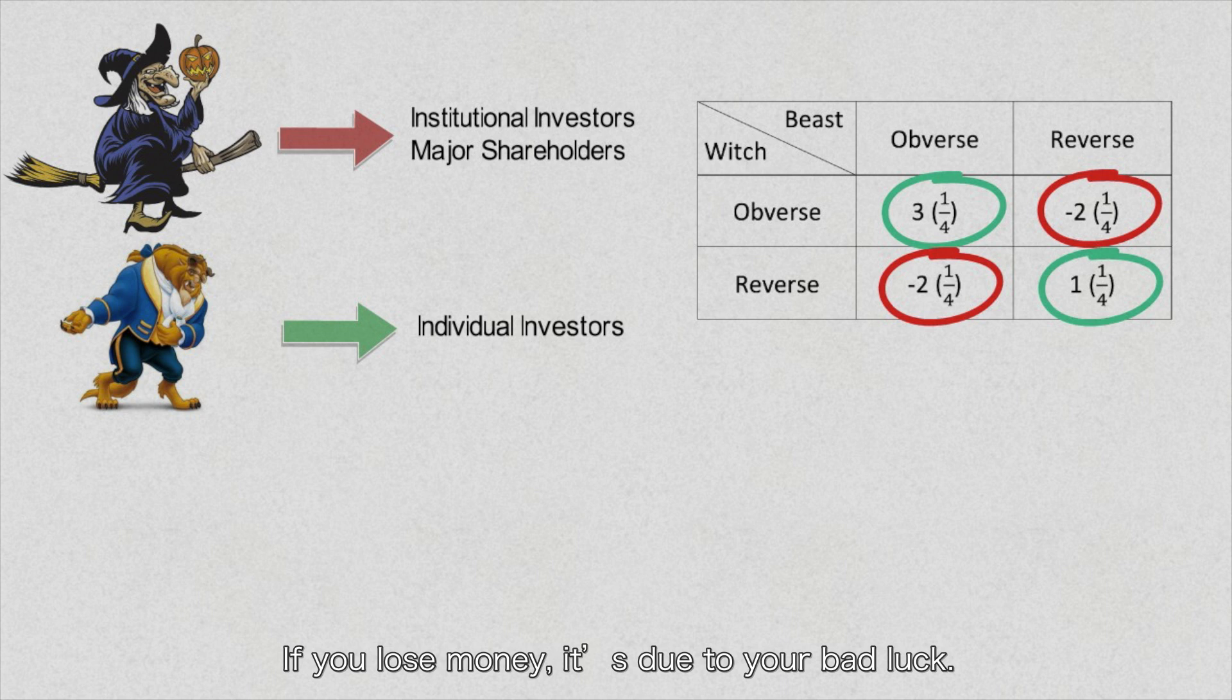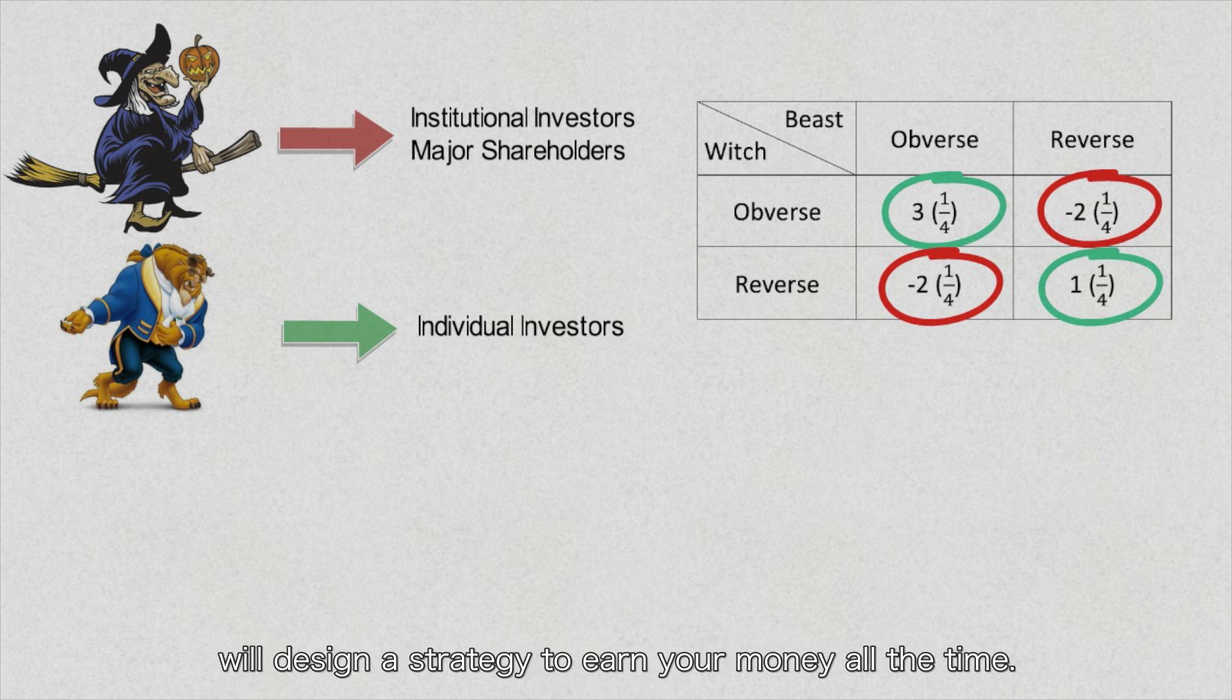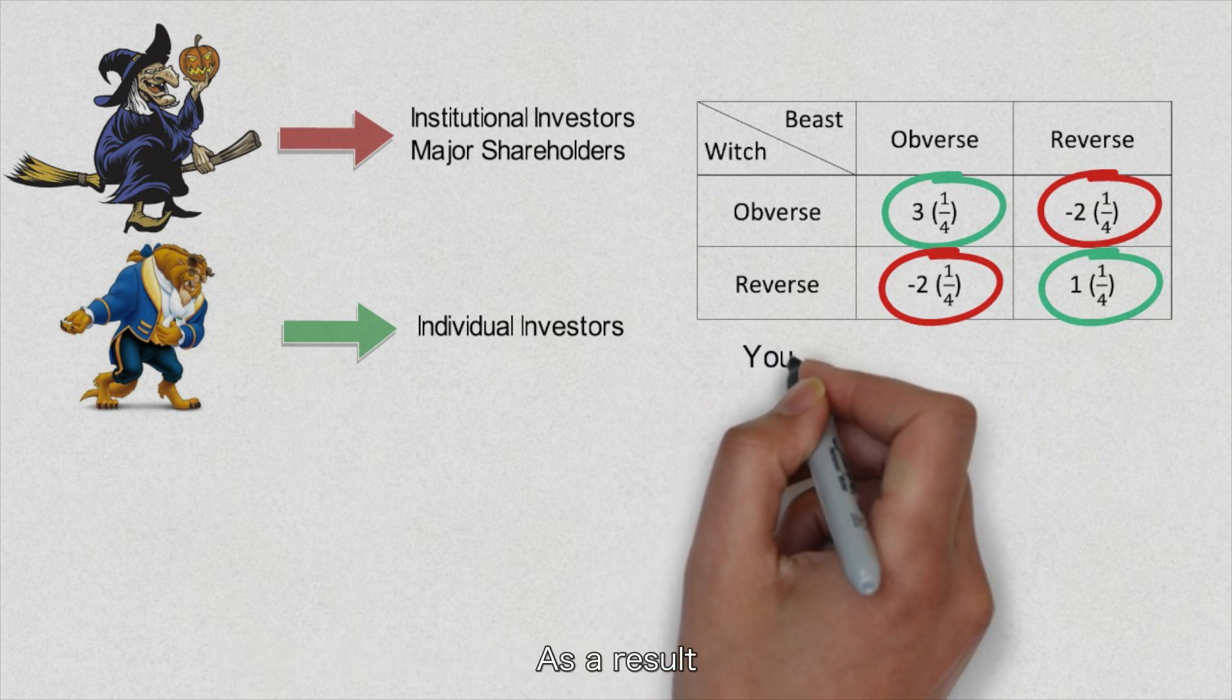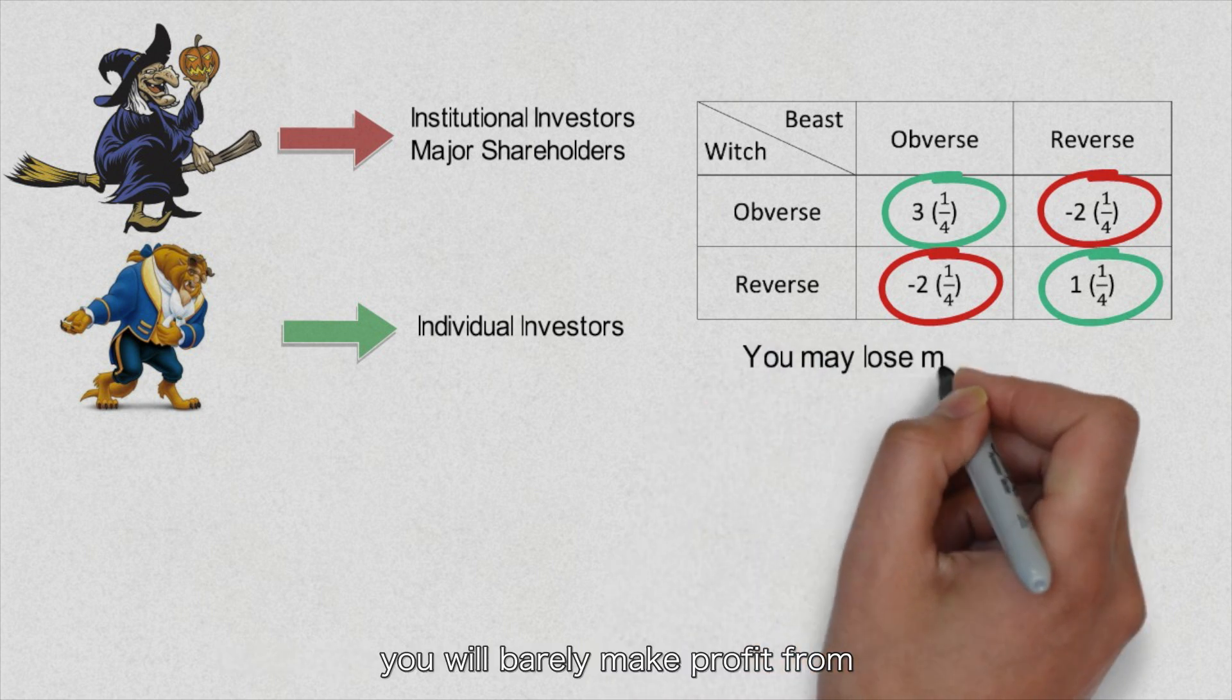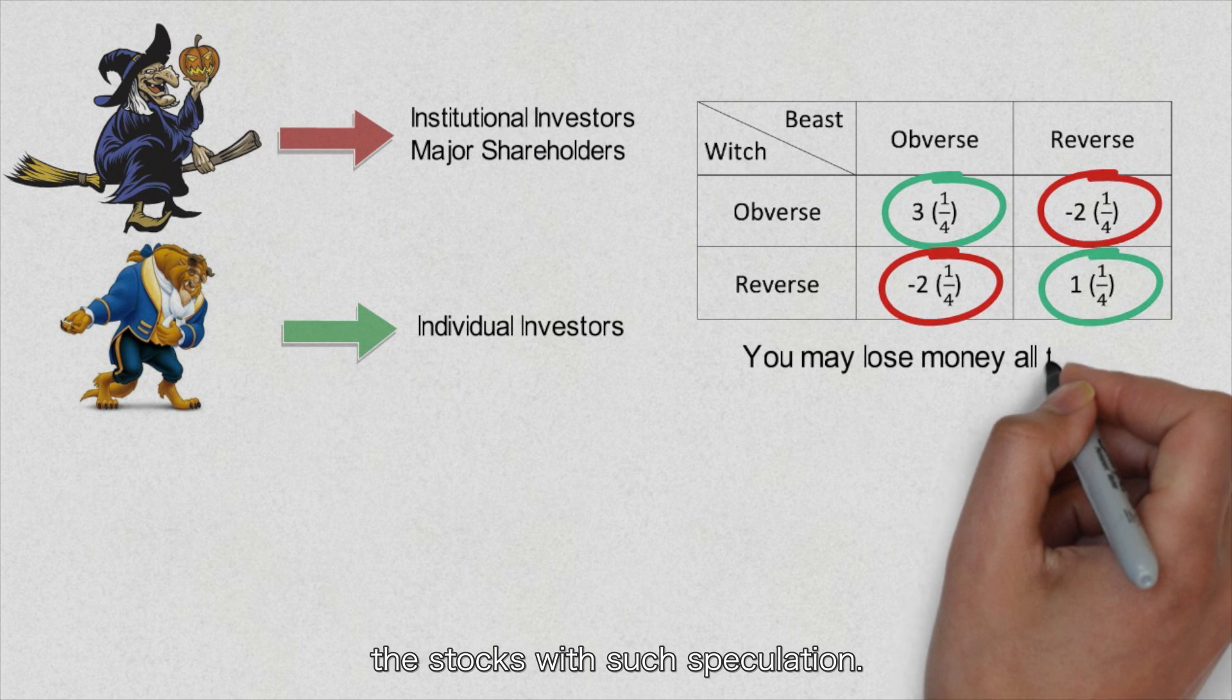It looks like the stock price fluctuates and we can make profits from its price changes. If you lose money, it's due to your bad luck. But the truth is that people who have the power to control the market will design a strategy to earn your money all the time. As a result, you will barely make profit from the stocks with such speculation.